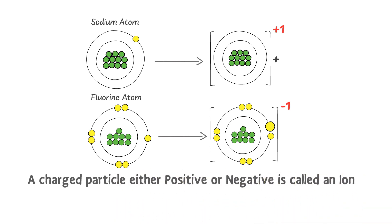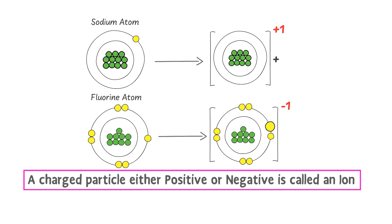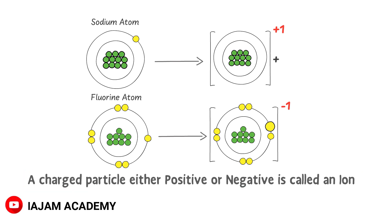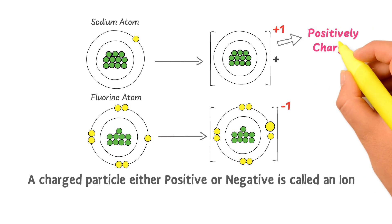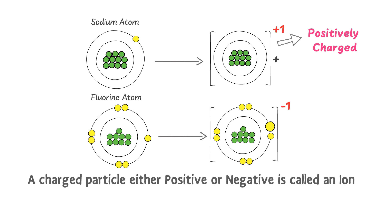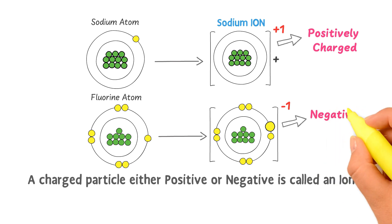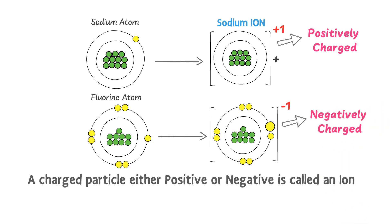In chemistry, a charged particle, either positive or negative, is called an ion. So when a sodium atom loses one electron and becomes positively charged, we call it a sodium ion.